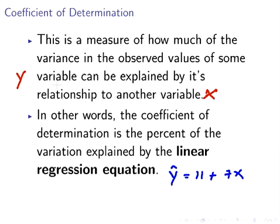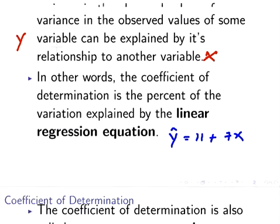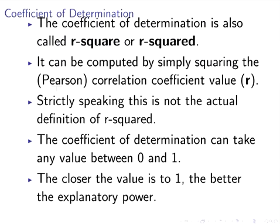The coefficient of determination is also called r-square or r-squared. It's simply computed by squaring the correlation coefficient r. Just to avoid any doubt, I mean the Pearson correlation coefficient.